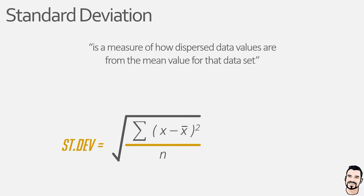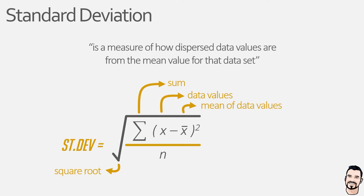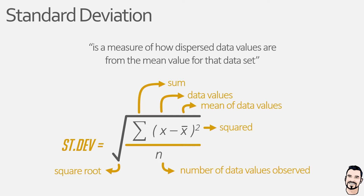So what is happening in this equation? Well, the standard deviation is essentially the square root of the sum of our data values minus the mean of the data values, giving us our deviation, squared, divided by one of two numbers. It can be the number of data values in our data set, or it can be the number of data values minus one.